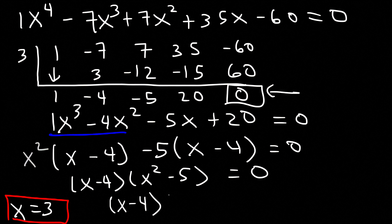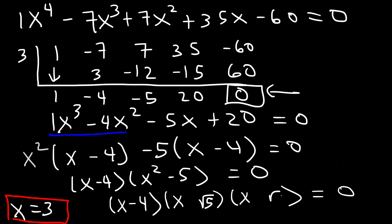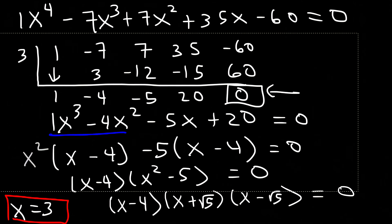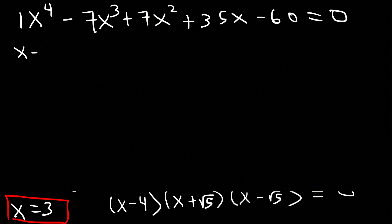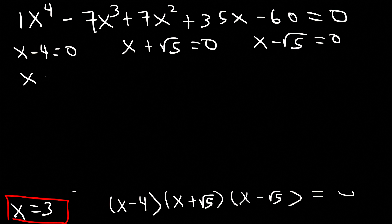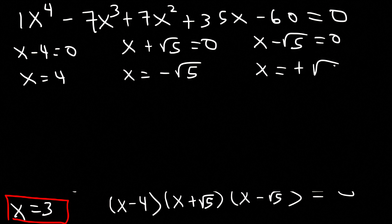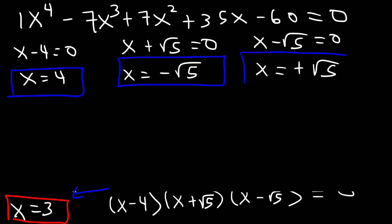Now let's factor x squared minus 5 using the difference of perfect squares technique. The square root of x squared is x, and the square root of 5 is the square root of 5. So there are going to be 4 answers in total. Setting each factor to zero: x minus 4 equals 0, x plus the square root of 5 equals 0, and x minus the square root of 5 equals 0. So x is equal to 4, negative square root of 5, and positive square root of 5. You should have four answers for a fourth degree polynomial.